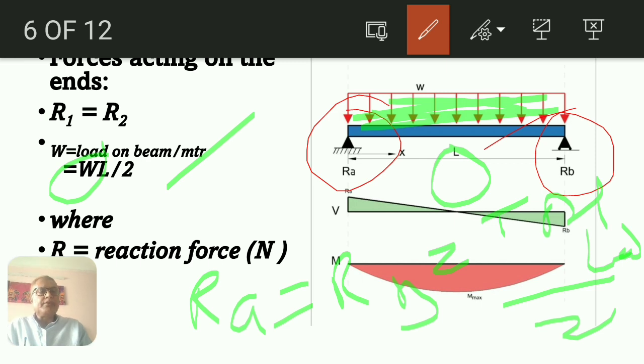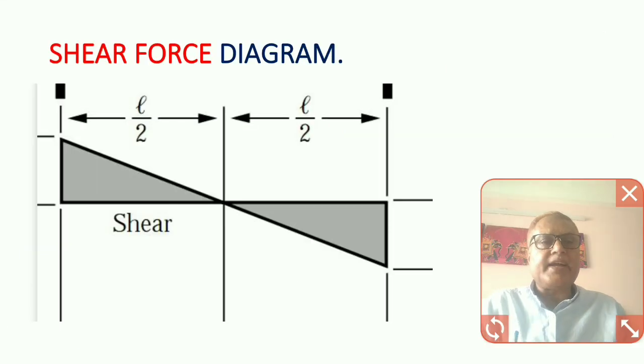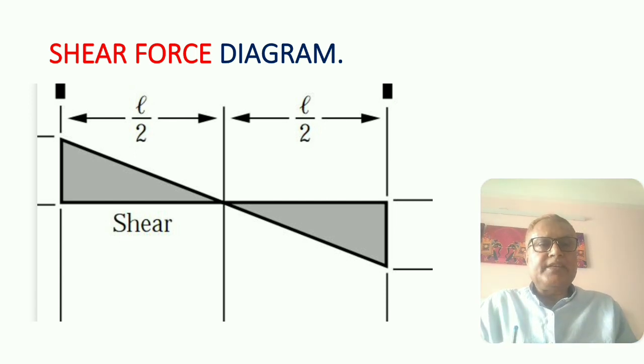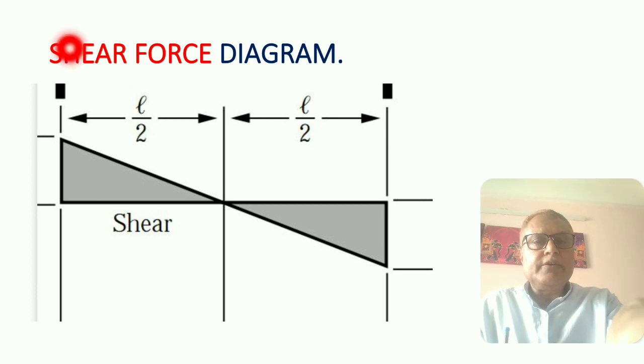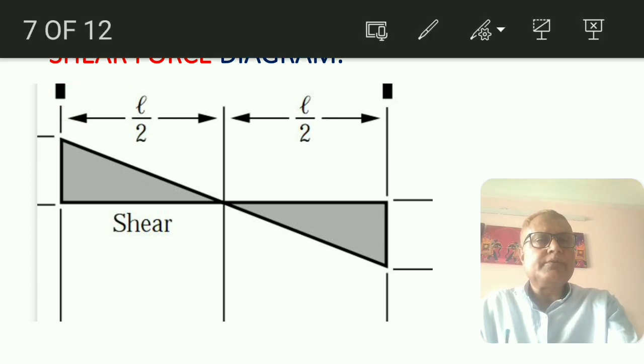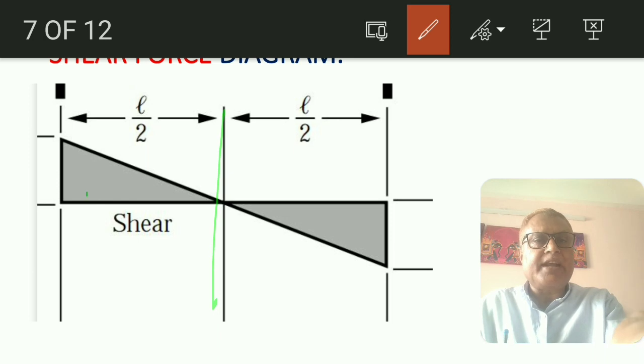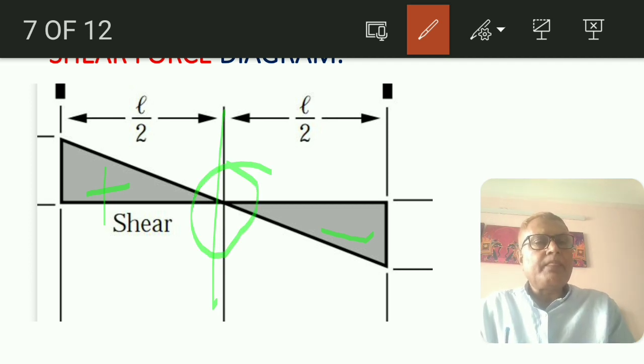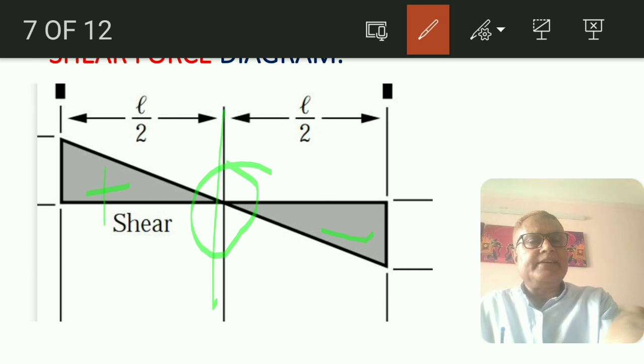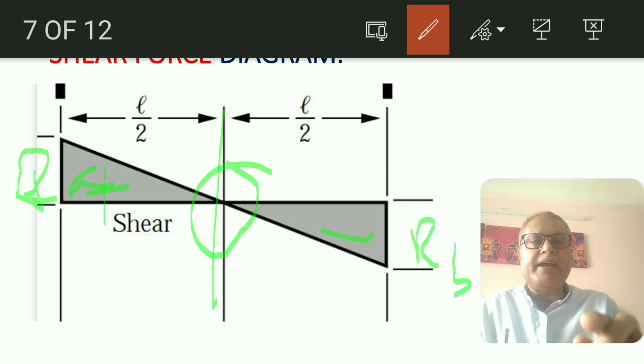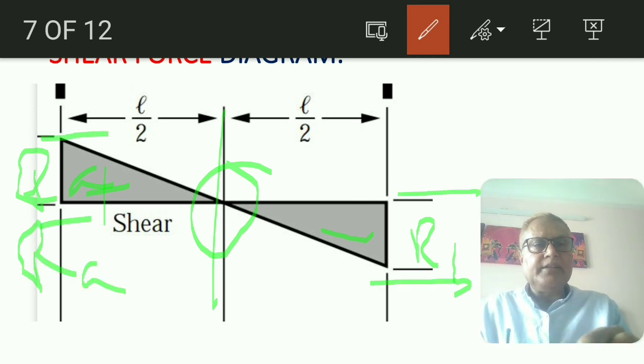Let's see, shear force diagram will be linear variation. At mid of beam, left side is positive and right side is negative, with linear variation up to center which is 0. Its magnitude at the supports is load divided by 2, and at the mid value will be 0.